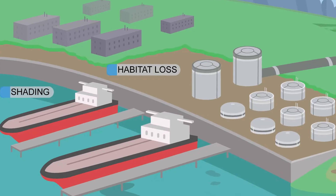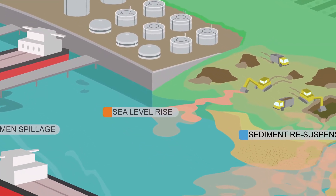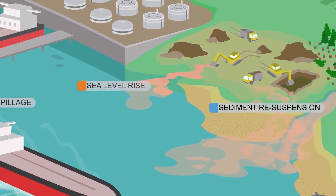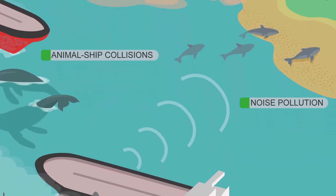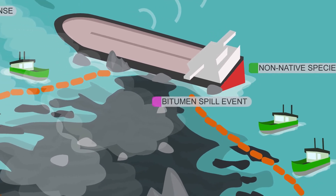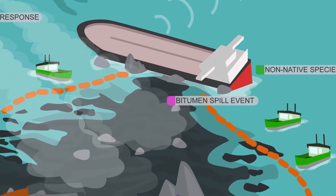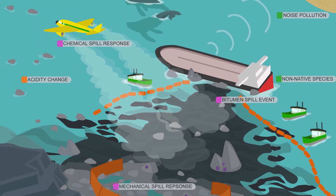The other 12 stressors are generated through the transportation of bitumen products to market, and those include everything from development activities at the coast — through the release of sediments as we start to dredge and modify the coastlines — all the way to the introduction of non-native and invasive species as we're opening up new coastal regions to shipping where we've never had that influence before.